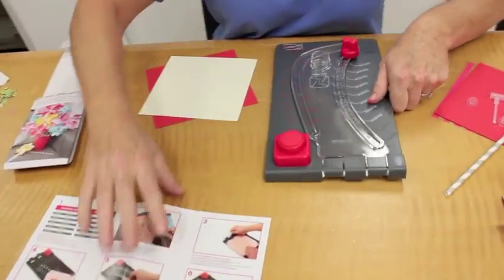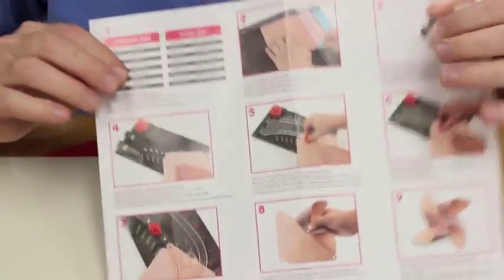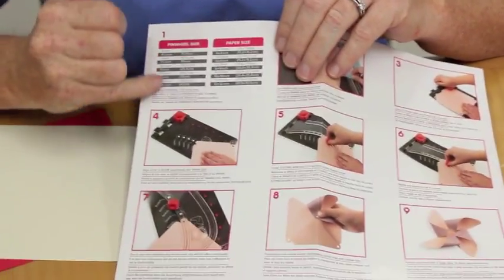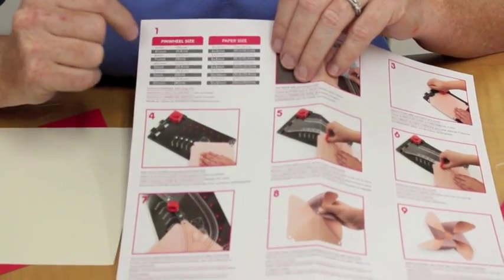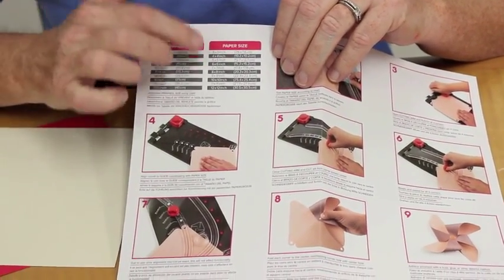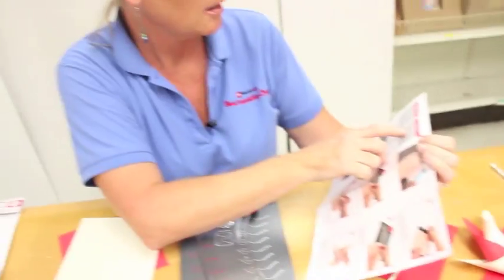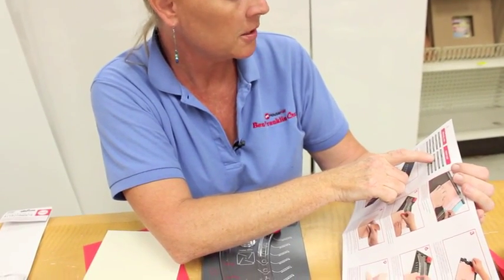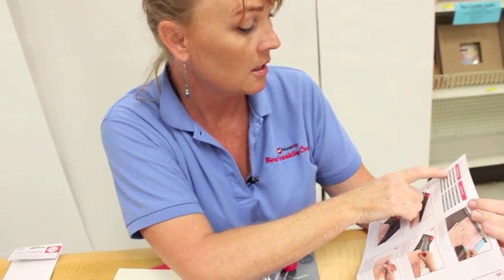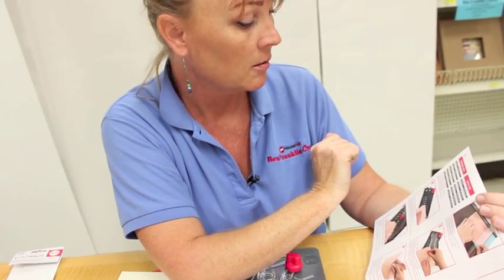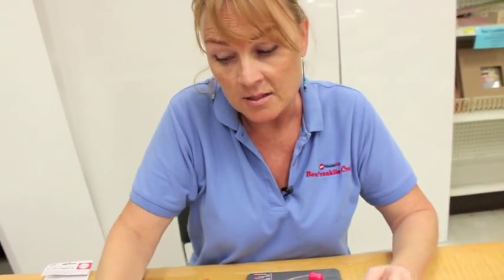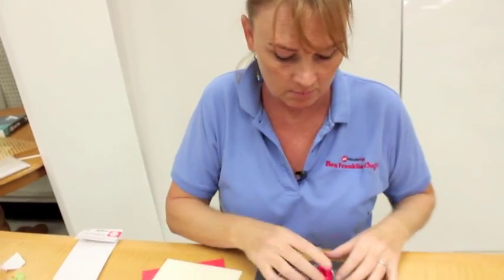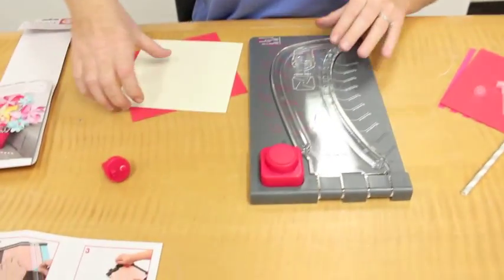The punch board comes with fantastic instructions that you can follow. It can make all different size pinwheels, and today we're going to make this one. When we use the paper size six by six, it makes a seven and a half inch pinwheel. The reason I like to use six by six is because when I'm using a twelve by twelve piece of paper, I can get four single pinwheels out of it, so it really maximizes what you're using.